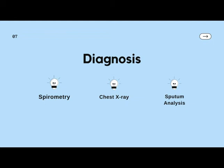Spirometry is used to assess how well the lungs work by measuring how much air is inhaled, how much is exhaled, and how quickly that occurs. It is used to diagnose asthma, chronic obstructive pulmonary disease, and other conditions that affect breathing — and can be performed simply in the clinic. The second most important diagnostic tool is chest X-ray, which gives a clear picture of the lung fields as well as the heart. Many disorders of the lung or heart can be diagnosed by looking at a chest X-ray — whether it is a foreign body, consolidation, solid lesion, cavity, fluid in the lung, or enlargement of the heart.